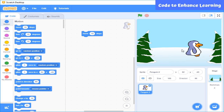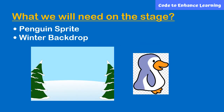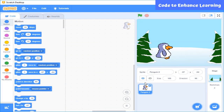Before starting, I am going to ask you a question: can you tell me what will happen on stage? We need a sprite which will move right, left, up, and down as the arrow keys are pressed on the keyboard. I will think about what we need on the stage — a sprite which looks like a penguin, because it will be a character in my game, and a background which is snowy because penguins live there. I have already got the penguin sprite and backdrop on the stage.